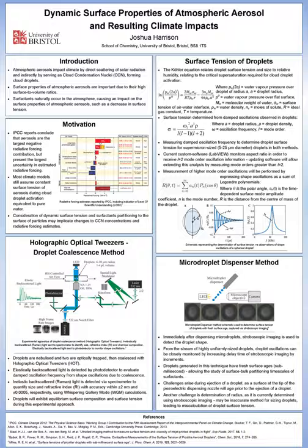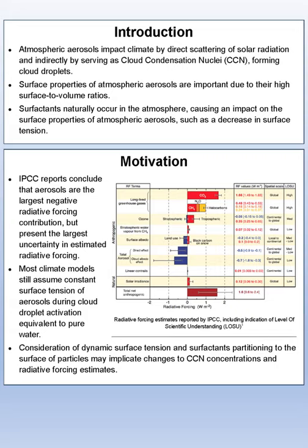To provide background, the IPCC report concludes that aerosols are the largest negative radiative forcing contribution, but present the largest uncertainty in these estimates. Atmospheric aerosols affect the climate either by direct scattering or absorption of solar radiation, as well as indirectly by serving as cloud condensation nuclei forming cloud droplets.